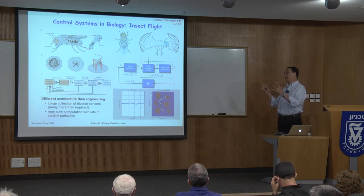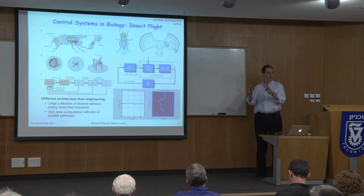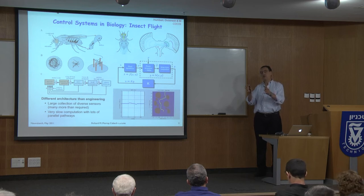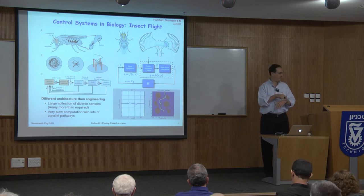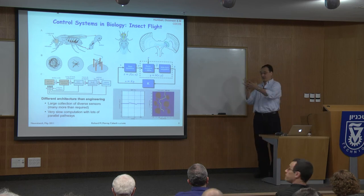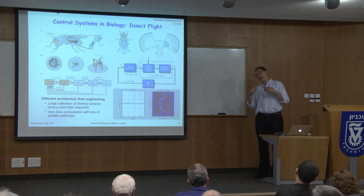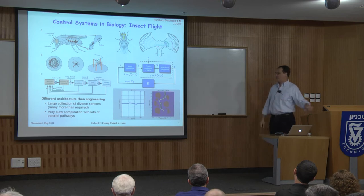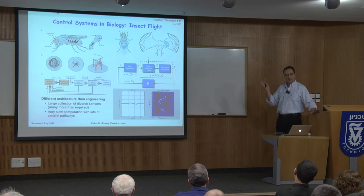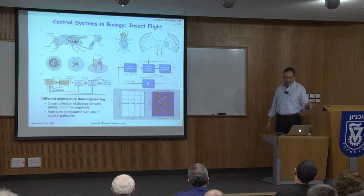From a control theory point of view, this raises the question: what are different architectures we might consider? If I want to design a small flying system running on the power of a watch battery, I'm not going to do that with the architecture we used on Alice, which required about three kilowatts of power just for computing. These insect-inspired architectures give us interesting insights into what we might consider for low-power systems.